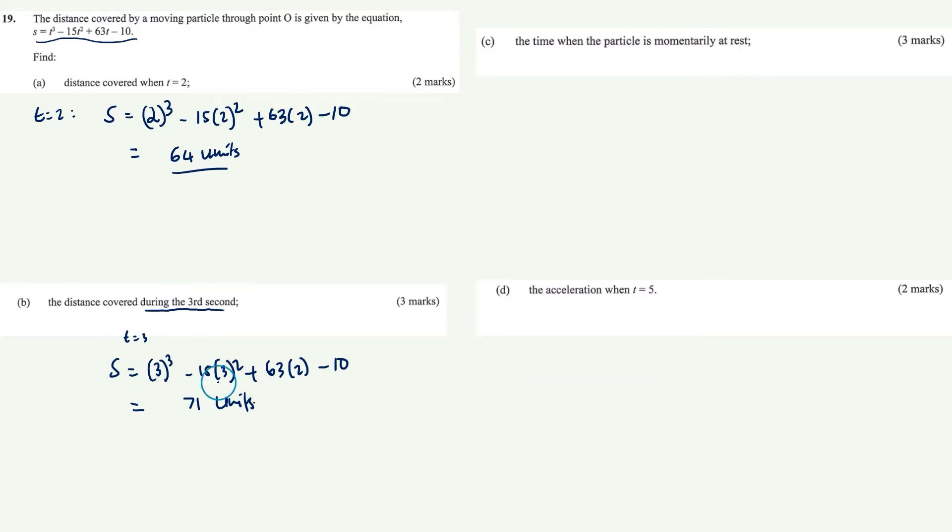This is for the whole 3 seconds. What we want is during the third second. So the distance during the third second is going to be 71 minus 64, and this will give us 7 units.